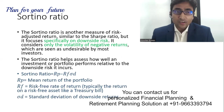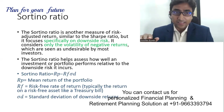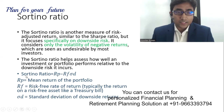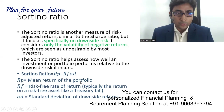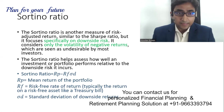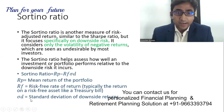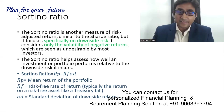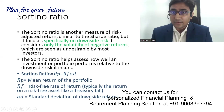Sortino Ratio also talks about risk-adjusted return, but it is specifically for downside risk. If you are confused between Sharpe Ratio and Sortino Ratio, look at the formula. In the Sharpe Ratio, Rp equals the mean return of the portfolio, Rf equals the risk-free rate of return — typically the return on a risk-free asset like a T-bill. In the Sortino Ratio, we take mean return minus risk-free return, divided by the standard deviation of downside returns only.